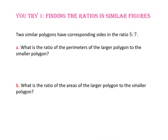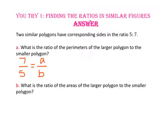Pause the video and do you try number 1. Two similar polygons have corresponding sides in the ratio 5 to 7. For part A, what is the ratio of the perimeters of the larger polygon to the smaller polygon? Since the scale factor of the larger polygon to the smaller polygon is 7 to 5, or A to B, and the ratio of the perimeters is also A to B, then the ratio for the perimeters is also 7 to 5.